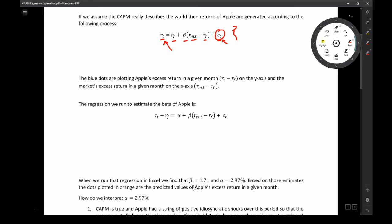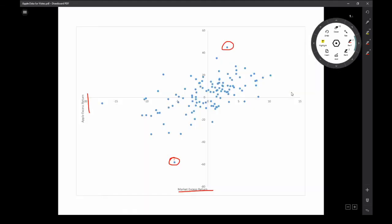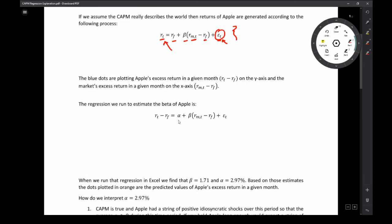The regression that we actually run in Excel is we're going to move the risk-free rate to the other side of the equal sign. So we're going to be estimating the excess return in that particular month. So that would be what we actually have plotted here on the X-axis. We're also going to throw in this constant alpha.